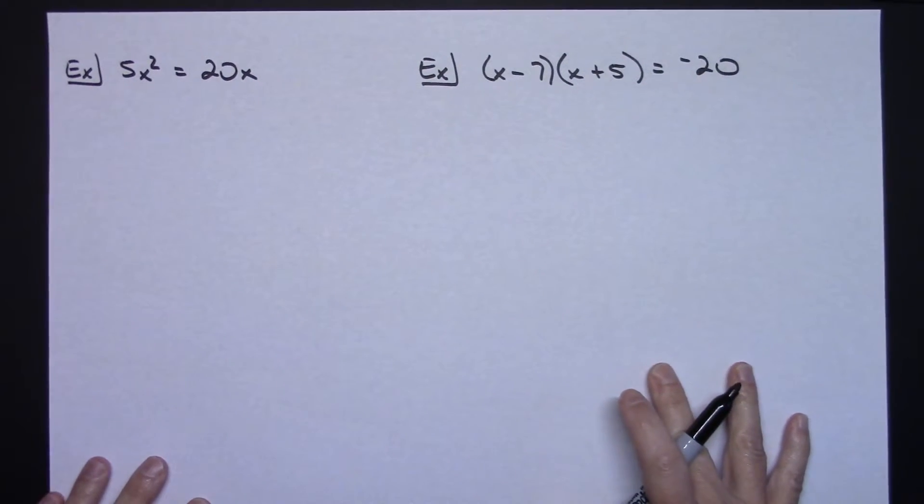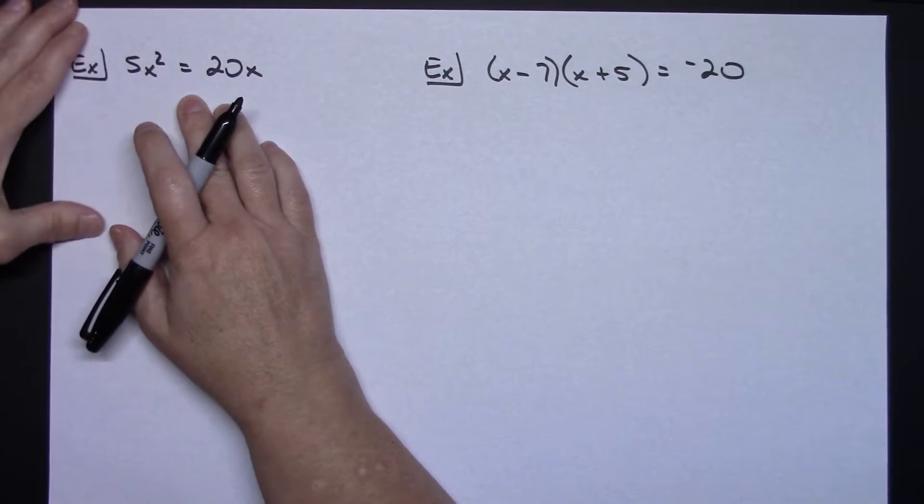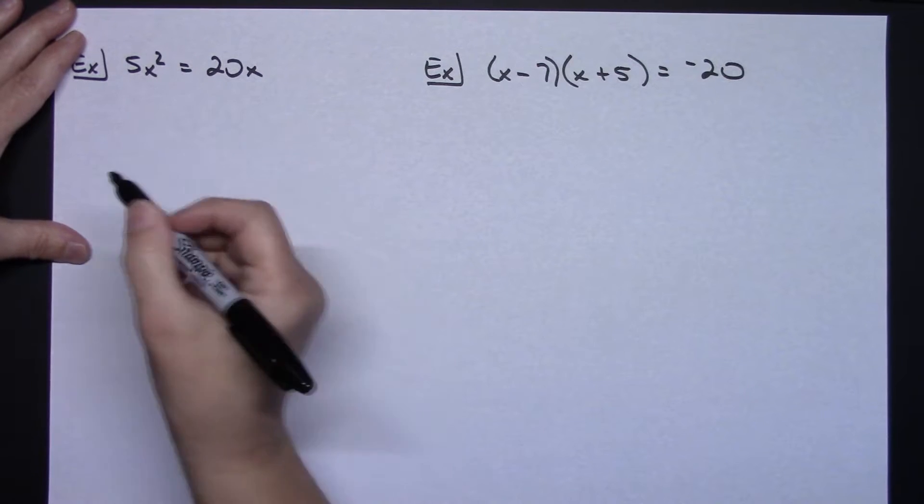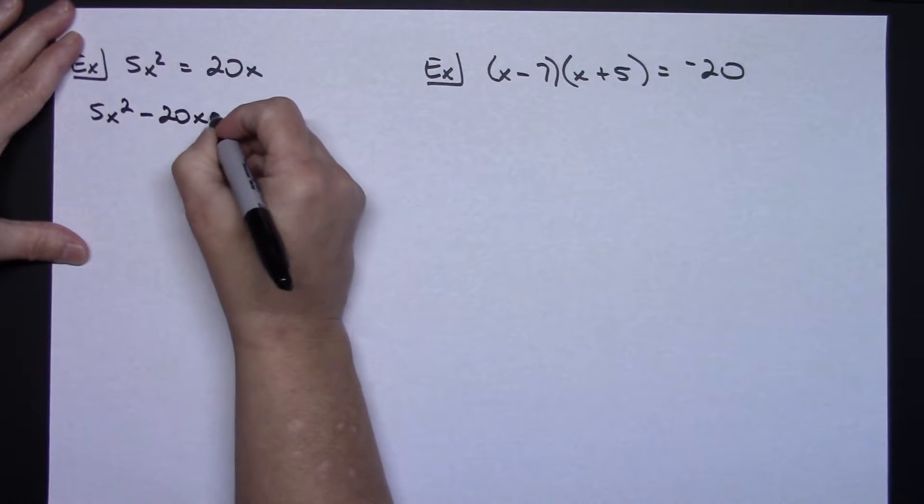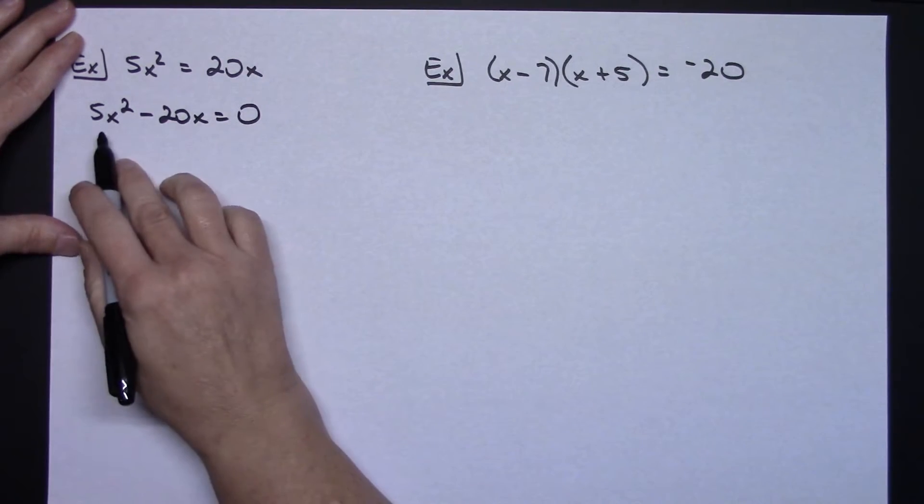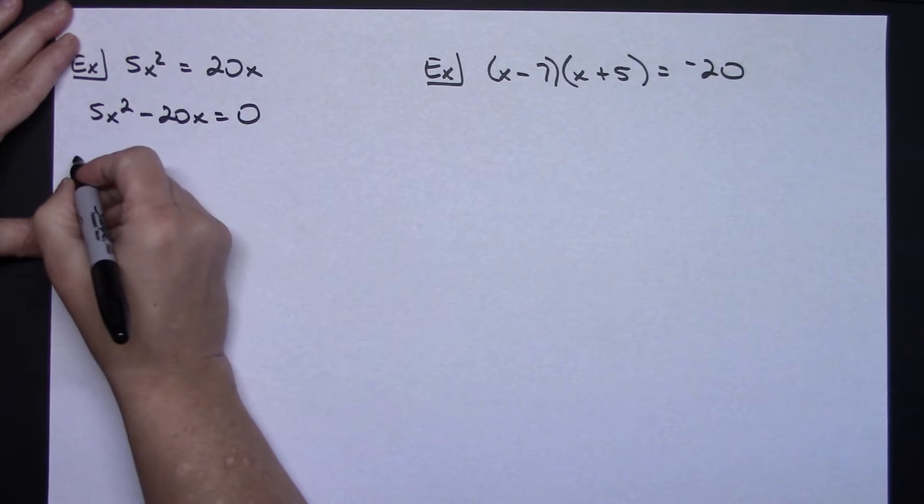Now let's do just a couple more. Let's take a look at 5x squared equals 20x. I need this set equal to 0, so I'm going to move everything to the left first. So 5x squared minus that 20x equals 0. Here again I don't have a trinomial, but I have two terms, and I can see very easily here that I've got a greatest common factor. So I'm going to take the greatest common factor of 5x out.